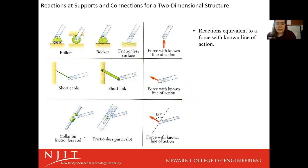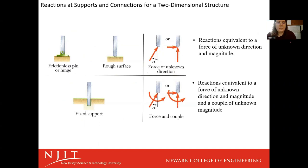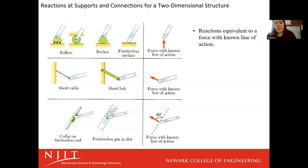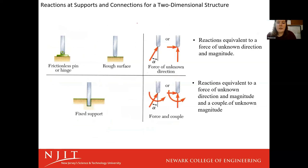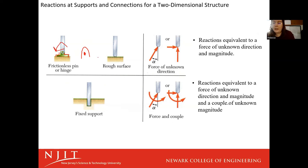I would not be super concerned with this one down here — this is not really going to be something you see until probably your dynamics class. The three we're going to focus on are our rollers, rockers, et cetera. This pin would be similar to the pin joint — sometimes you'll see it looking like a tombstone with a dot in the middle. Because there's a pin here, this block is fixed to the ground. We're still able to rotate around, but we're not able to slide up and down or left and right. So our constraints are up and down and left and right.